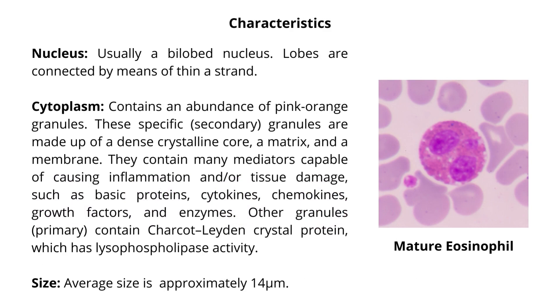The nucleus of eosinophils is usually bilobed. However, a nucleus containing three lobes is sometimes found. The lobes are connected by means of thin strands.